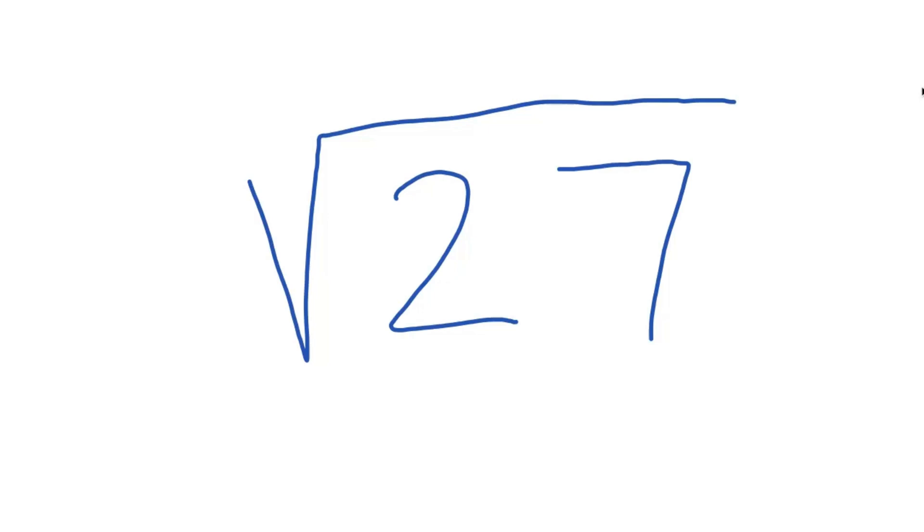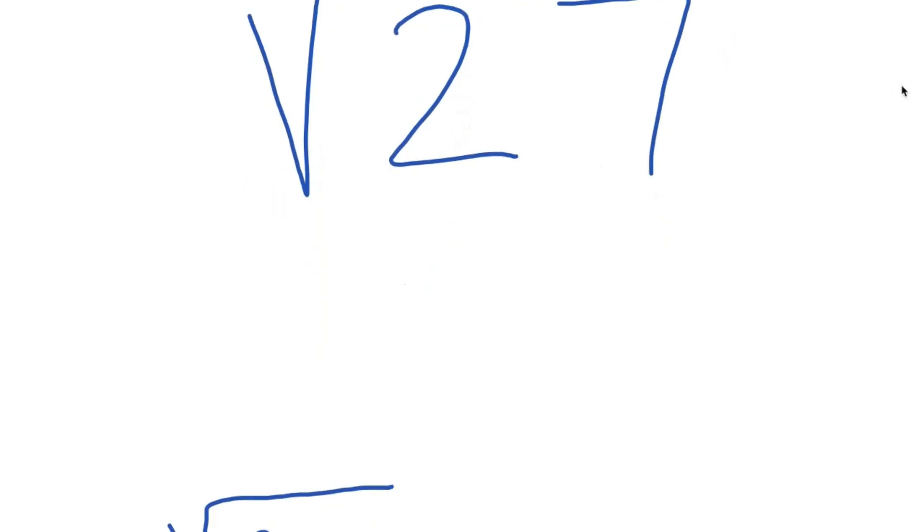So if I told you to find the square root to the numerical value to the decimals of square root 27, could you do it? Well, with this crazy method, you get super close.